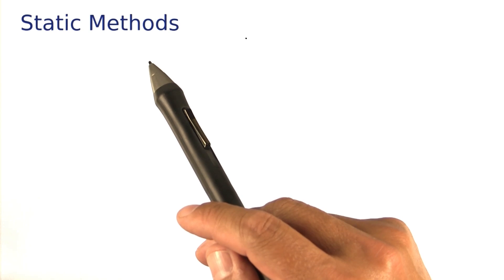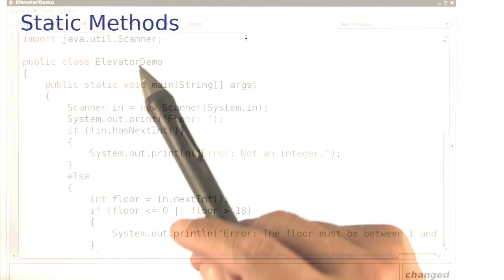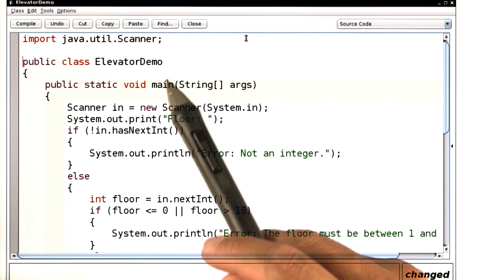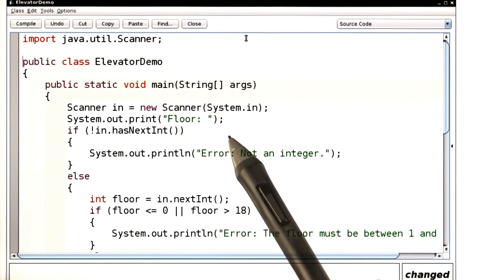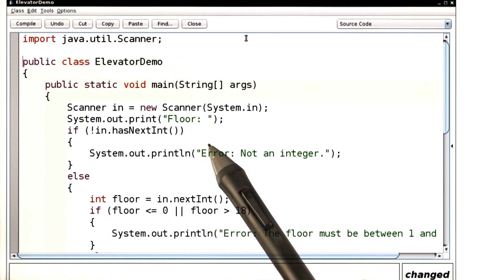Let's go back to a program that you saw in lesson five. In the elevator demo, we read in a number, and then we first checked whether it was a valid integer, whether it was within range, and only then were we able to do any work with it.